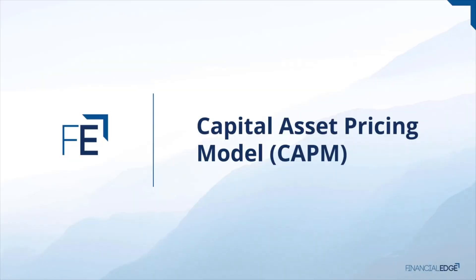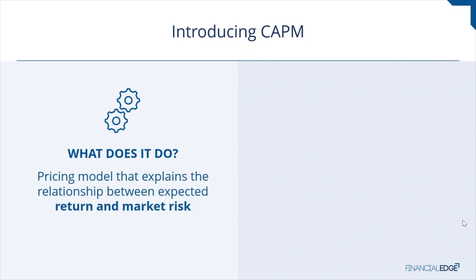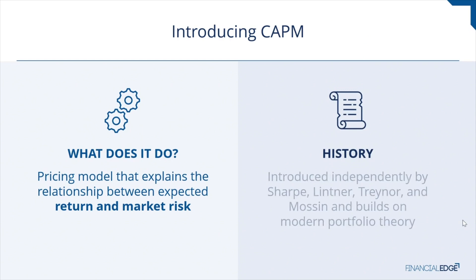The Capital Asset Pricing Model, or CAPM, explains the relationship between expected return and market risk. It is one of the most significant innovations in portfolio history. The model is simple yet powerful, intuitive yet profound, and uses only one factor, and yet it is broadly applicable.